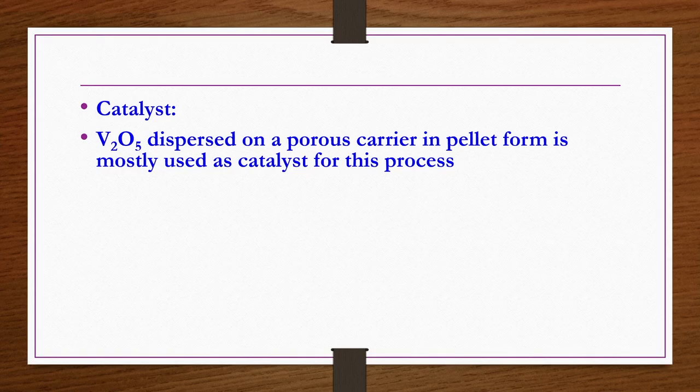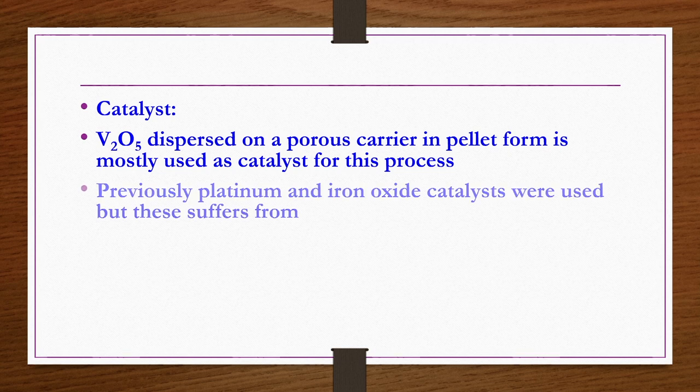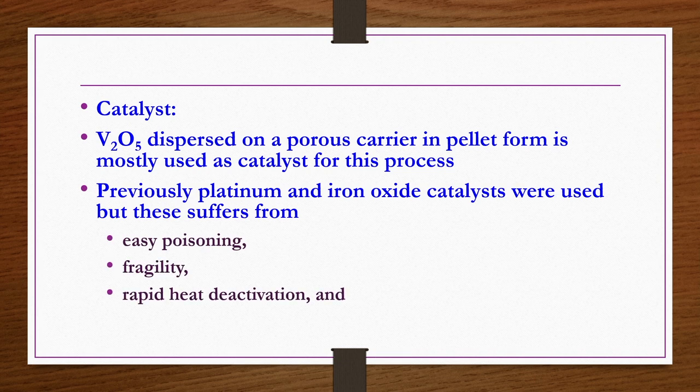Regarding the catalyst: previously platinum and iron oxide catalysts were used, but they suffered from poisoning, rapid deactivation due to heat, and high initial investment since platinum is expensive. People then found that V2O5 — vanadium pentoxide — is the best catalyst for conversion of SO2 to SO3. V2O5 dispersed on a porous carrier in pellet form is mostly used for this purpose.